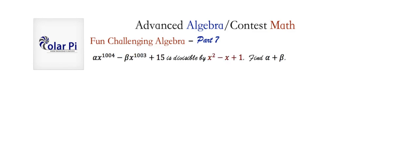Alright, so the question is, given that alpha times x to the power of 1004 minus beta times x to the power of 1003 plus 15 is divisible by the quadratic x squared minus x plus 1, we have to find the sum of alpha and beta.